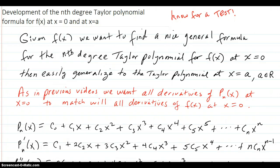Here is the development of the nth degree Taylor polynomial formula for f(x) at x equals zero, and then we generalize to x equals a, any real number.